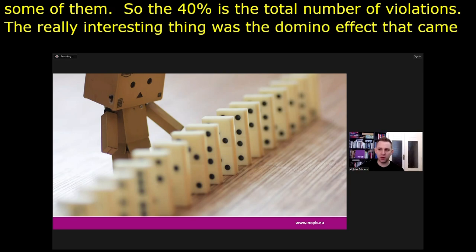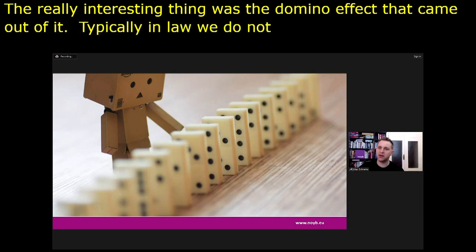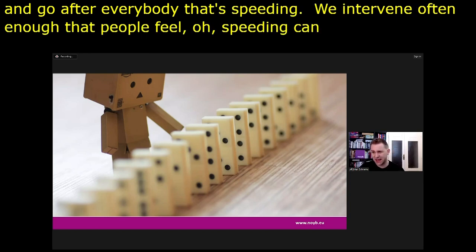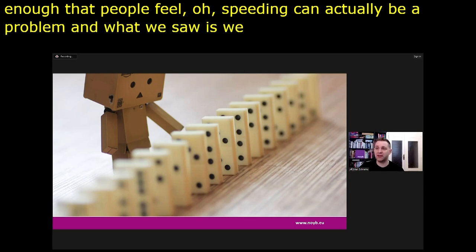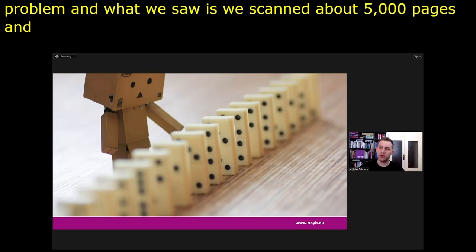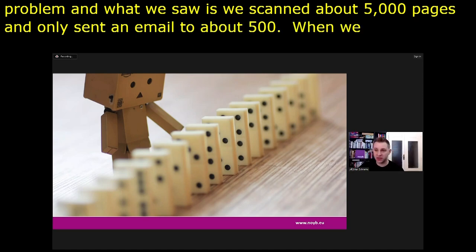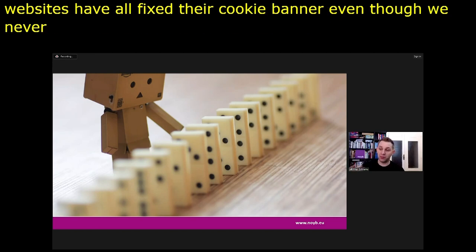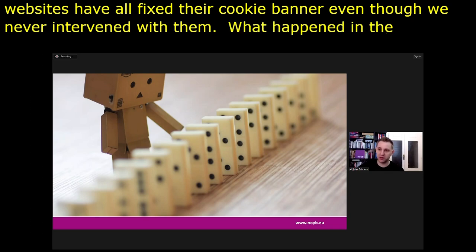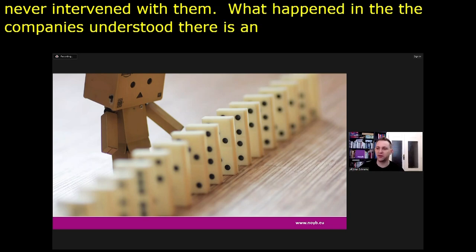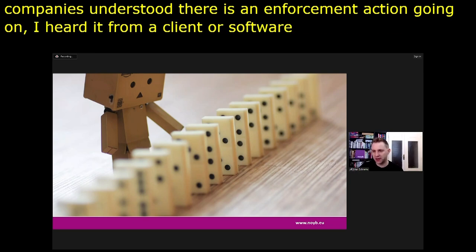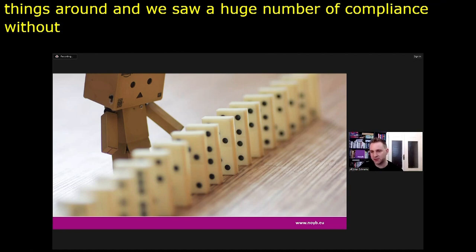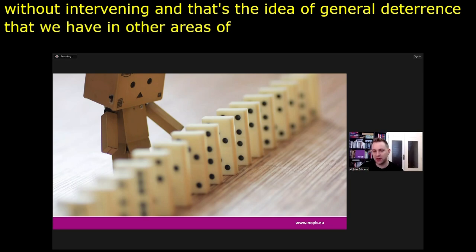There was only about 18% full compliance because companies typically had six or seven violations and fixed some of them. The really interesting part was the domino effect: we scanned about 5,000 pages and only sent emails to about 500. When we continued with the rest, we suddenly saw hundreds of other websites had fixed their cookie banners even though we'd never intervened with them. Companies understood there was enforcement action going on, heard it from colleagues and software providers. This is exactly the idea of general deterrence that works well once you can speed up enforcement and be a credible threat.